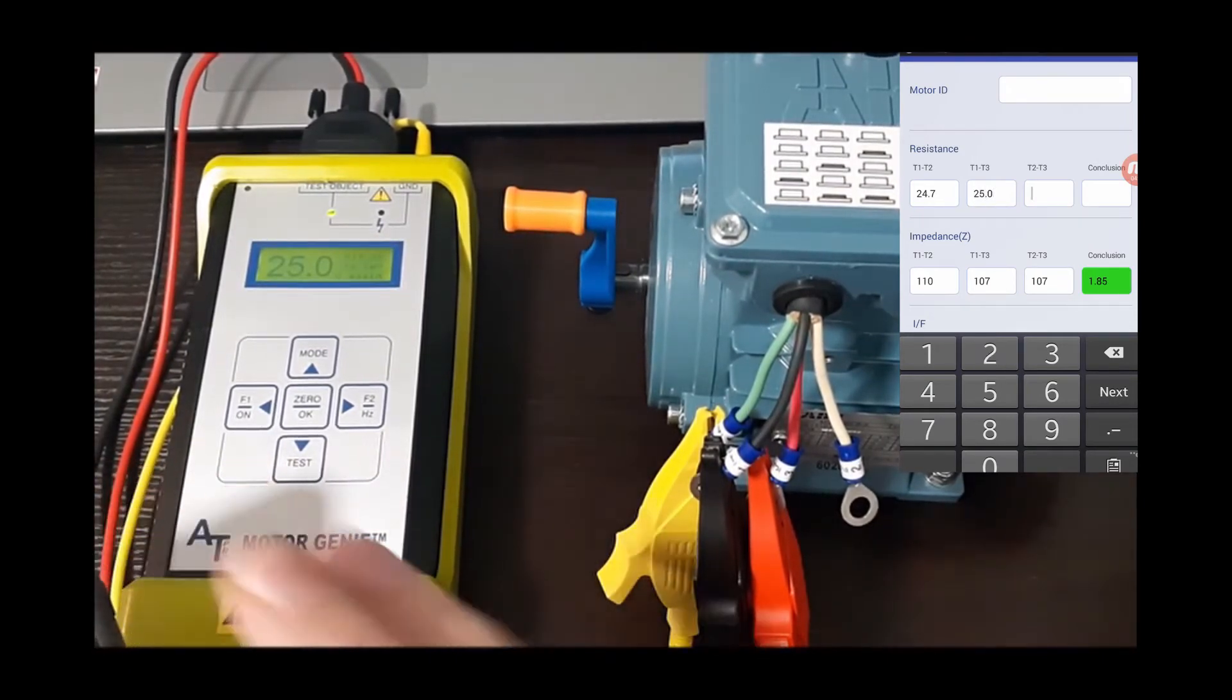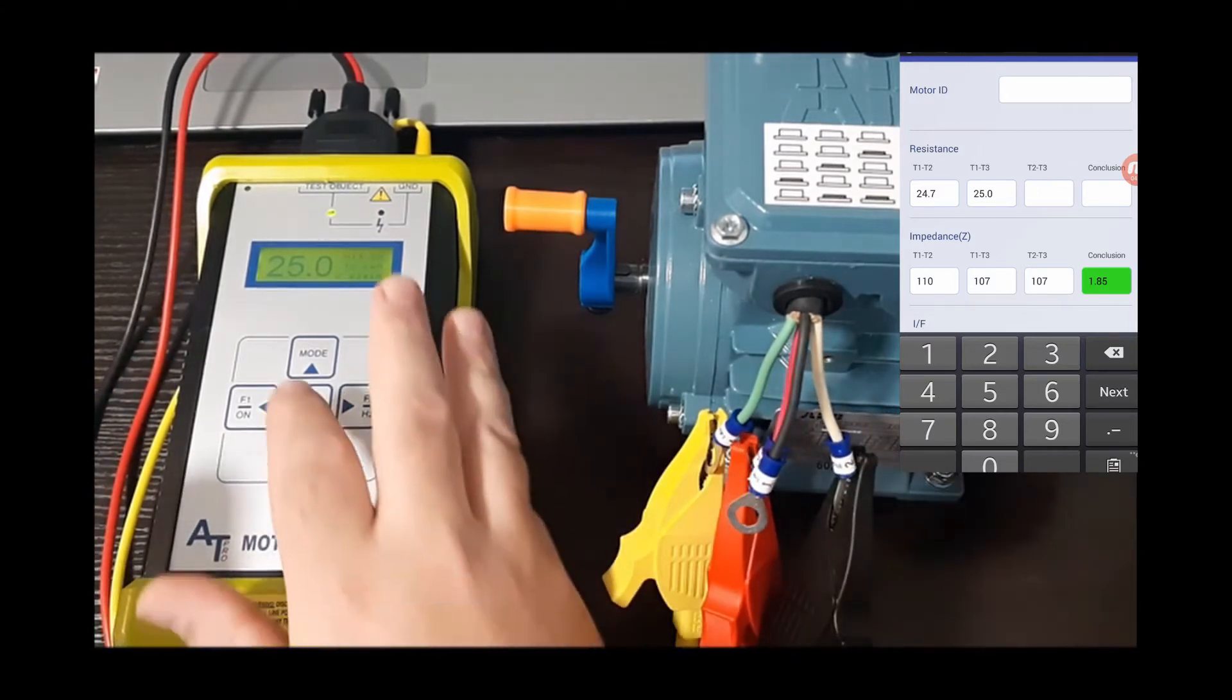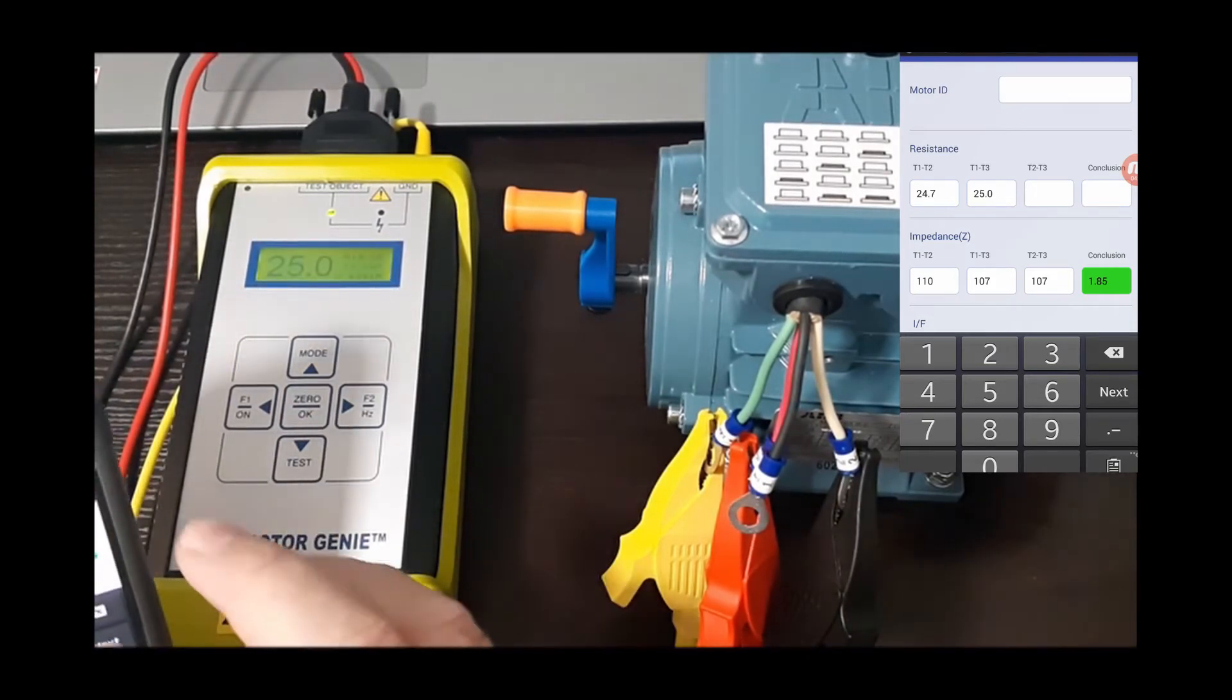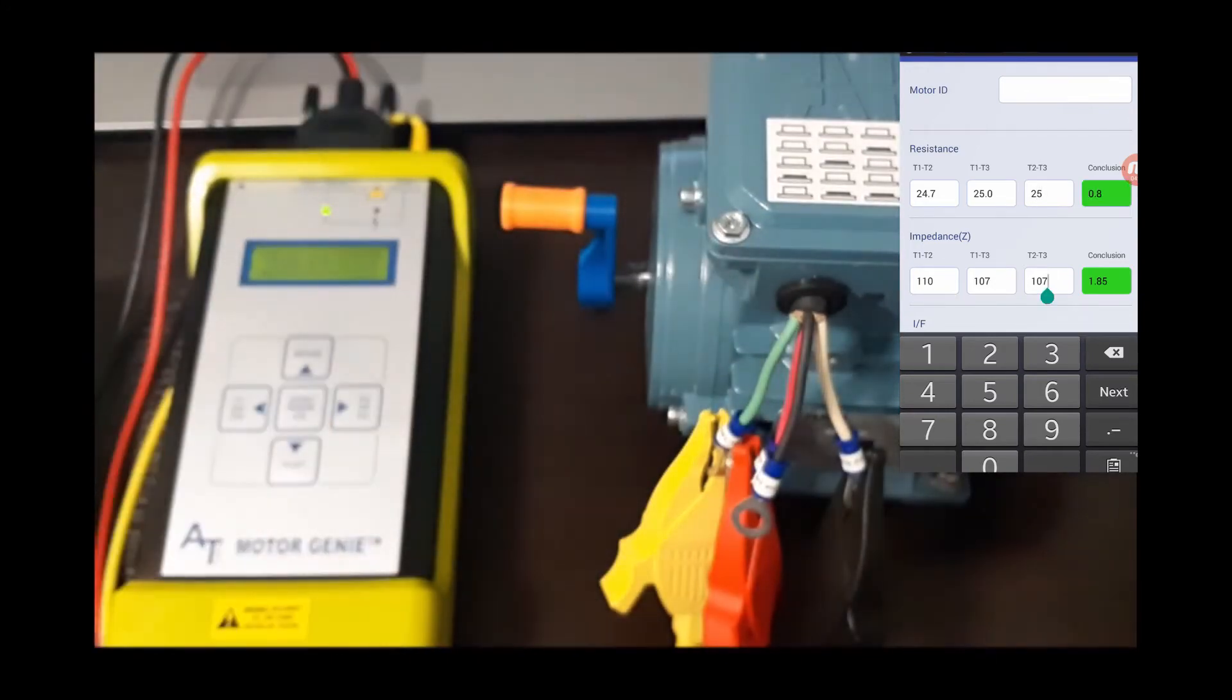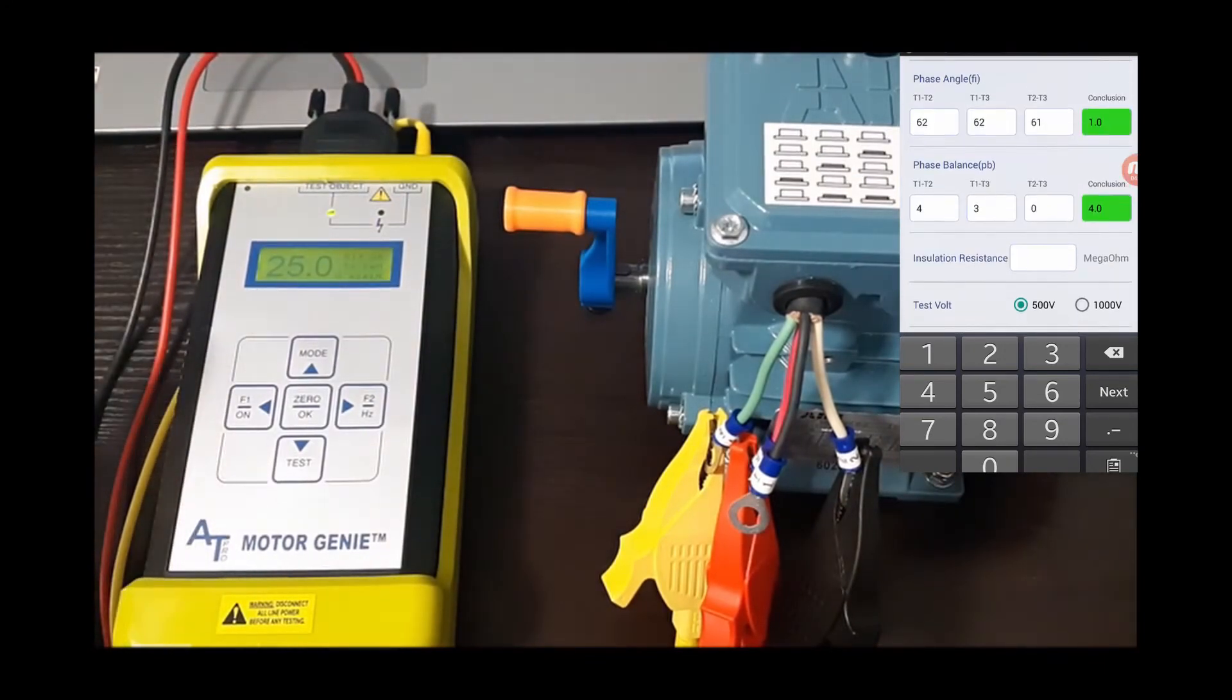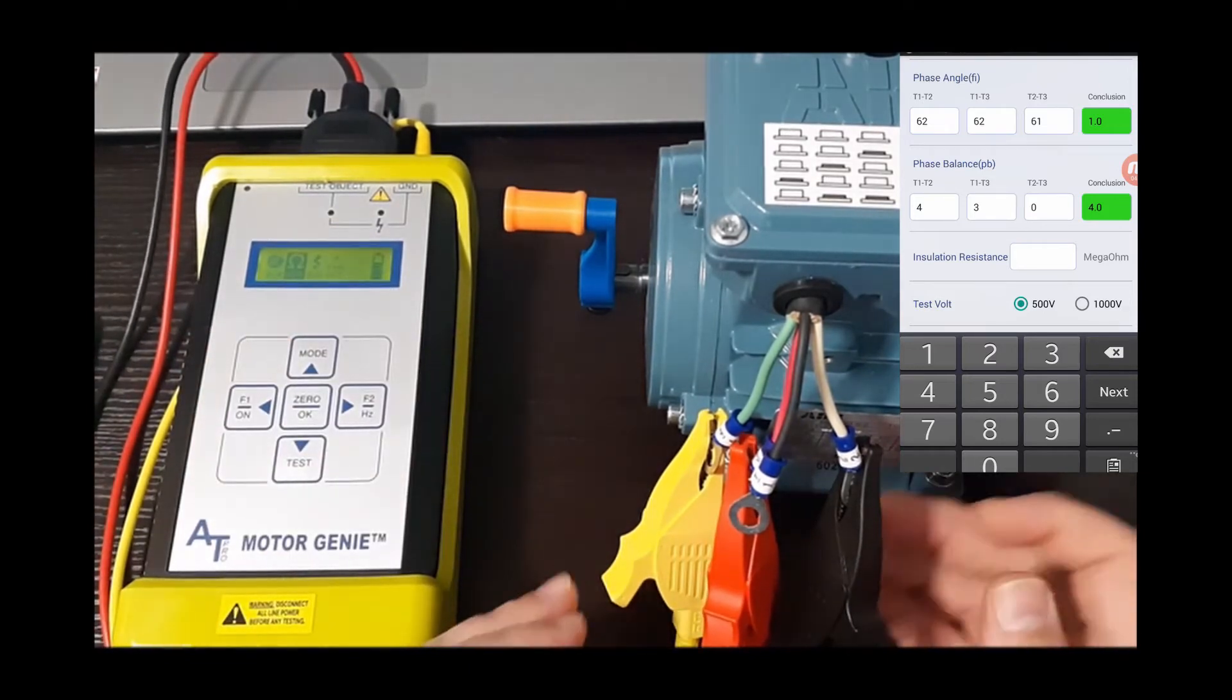25.0. We're going to go 2-3. So I'm using the app here, you can use paper and you can do this manually, you just need to know the values a little bit more off the top of your head. So 25 and that one is also a good reading.